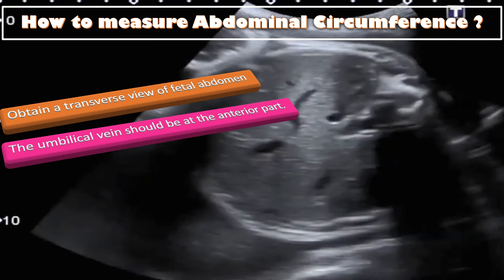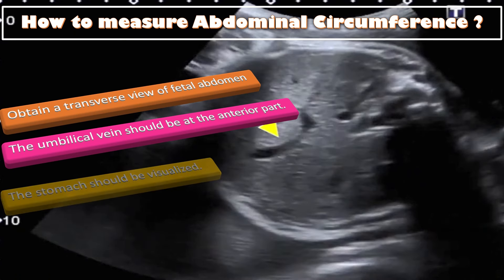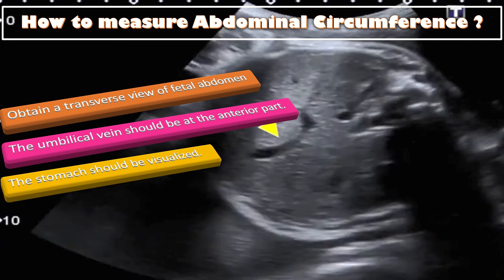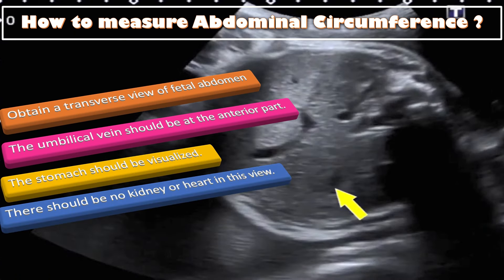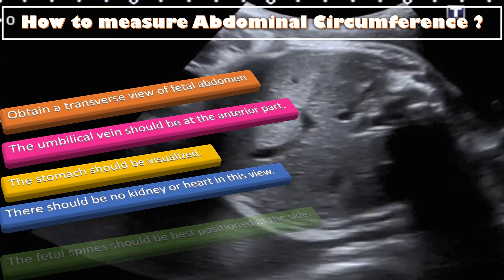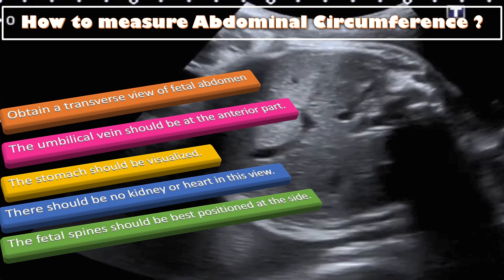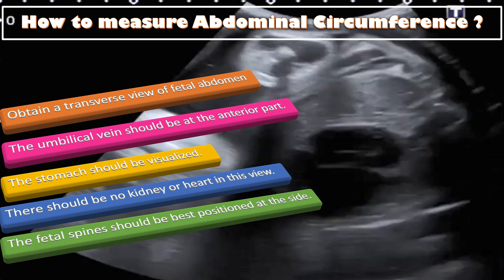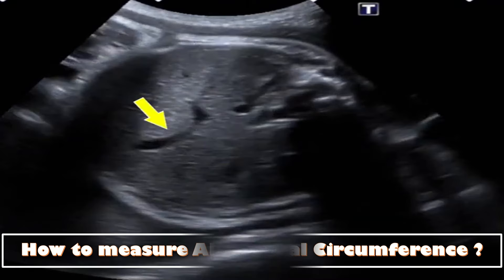In the transverse view, the umbilical vein should be at the anterior part, the stomach should be visualized, and there should be no kidney or heart in the view. The fetal spine should be best positioned at the side. Place the caliper on the outer border of the abdominal skin to measure the abdominal circumference of the fetus.